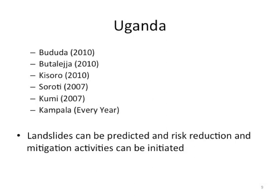Examples of floods in Uganda: floods occurred in Bududa in 2010, Butaleja in 2010, Kisoro in 2010, Soroti in 2007, Kumi in 2007, and they occur in Kampala every year.